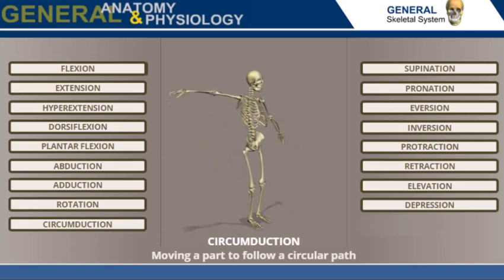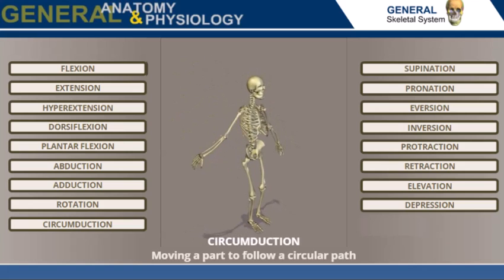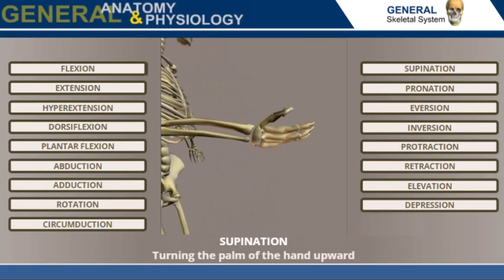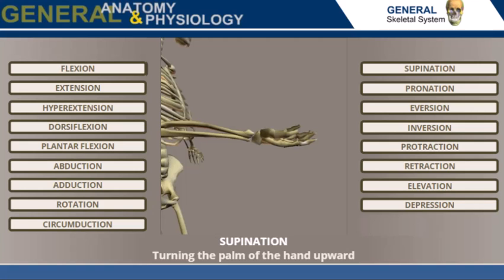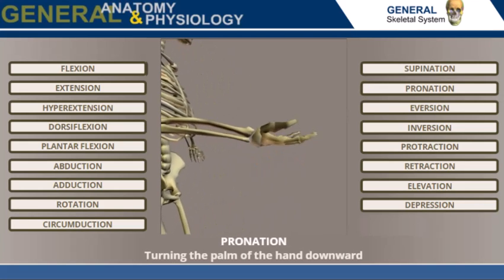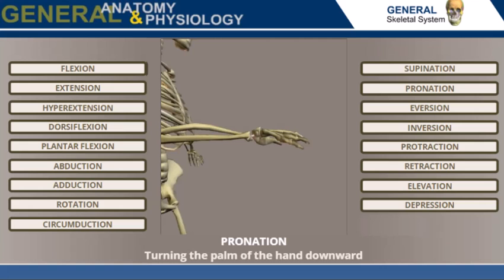Circumduction: moving to follow a circular path. Supination: turning the palm of the hand upward. Pronation: turning the palm of the hand downward.